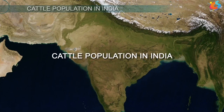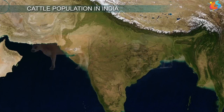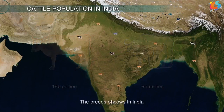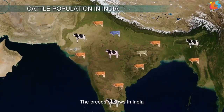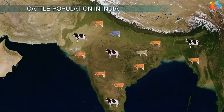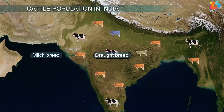In India, the population of cows and buffaloes is about 186 million and 95 million respectively. There are 26 indigenous breeds of cows in India, which are categorized into milk breed, draught breed, and dual-purpose breeds.